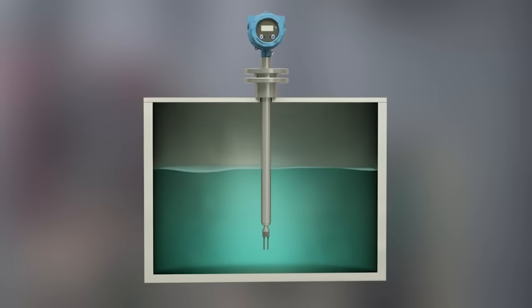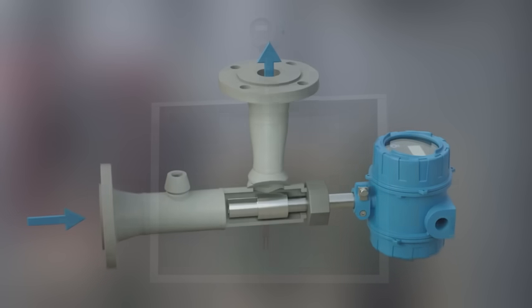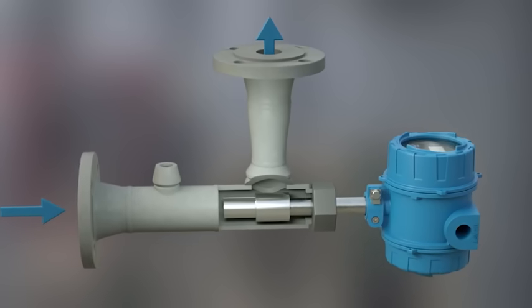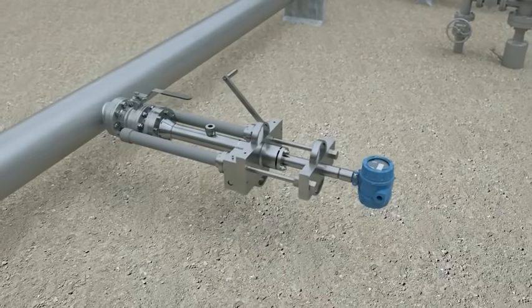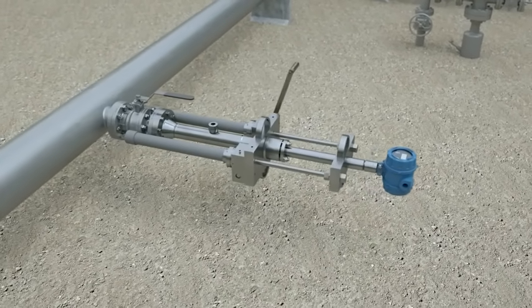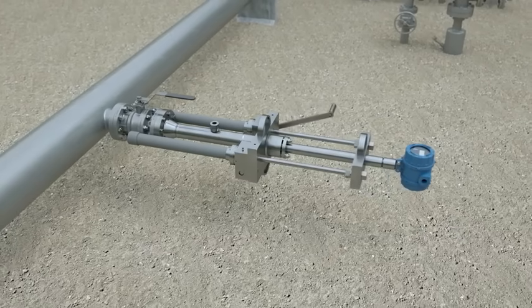Different types of installations are available, including tanks, bypass lines, and pipes. Where required, it can be supplied with a retractor assembly to easily insert or remove the meter without interrupting the process.